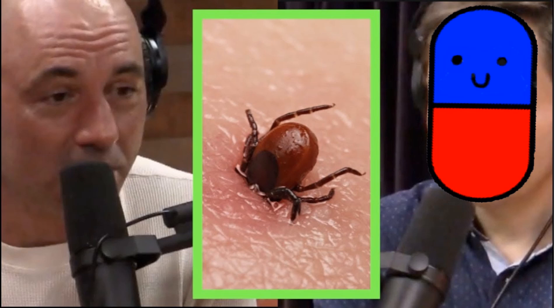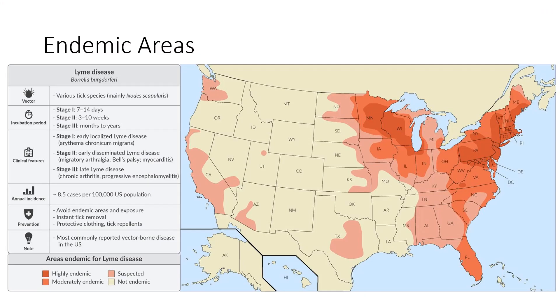Lyme disease — what is it, how do you notice it at different stages, and what are the treatments? Those are the kinds of things we'll be covering in this video. I'm going to guide you through a short, comprehensive understanding of this disease and how it's treated. This is a map of the U.S. showing all the different Lyme endemic areas — the darker the area in red, the more Lyme disease has been found there.